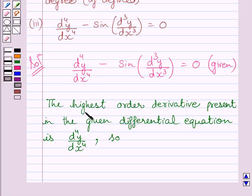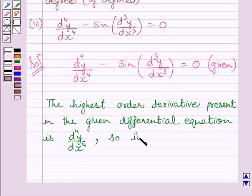We can write: the highest order derivative present in the given differential equation is d4y upon dx4, so its order is 4.